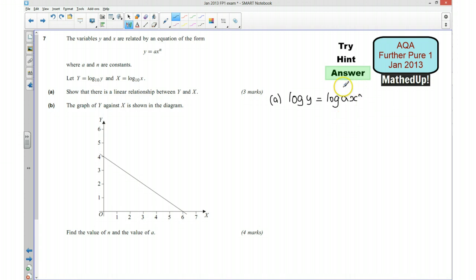Now using my log laws, I can write this in a different form. So I'm going to write it as log Y equals, and we need to be careful here, because the common mistake that people make is that they say this means the same as N times log AX. What we need to remember is that the N is the power of the X, not the power of the A. So actually, we need to separate this in this way first. So we've got log A plus log X to the power of N.